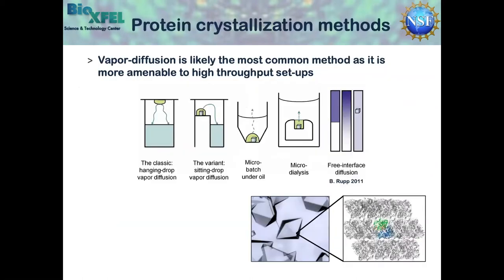Broadly speaking, there are five crystallization methods I'll cover today. Vapor diffusion is the most common method as it's more amenable to high-throughput setups. The first three are vapor diffusion experiments: the classic hanging drop vapor diffusion experiment uses a cover slip. Can you see my pointer, Bill?